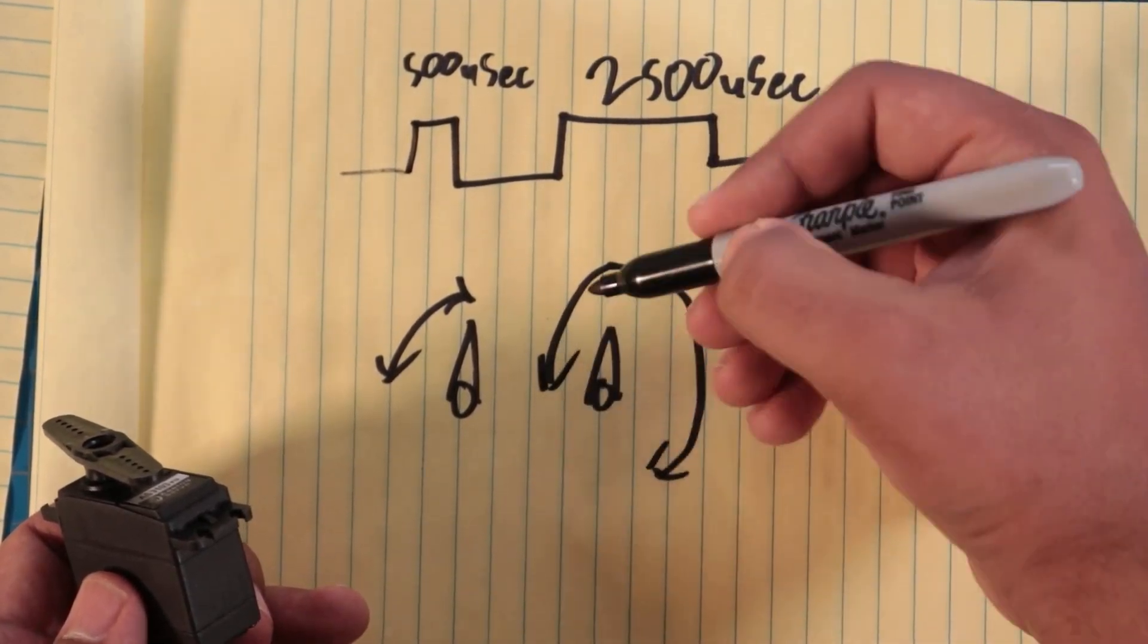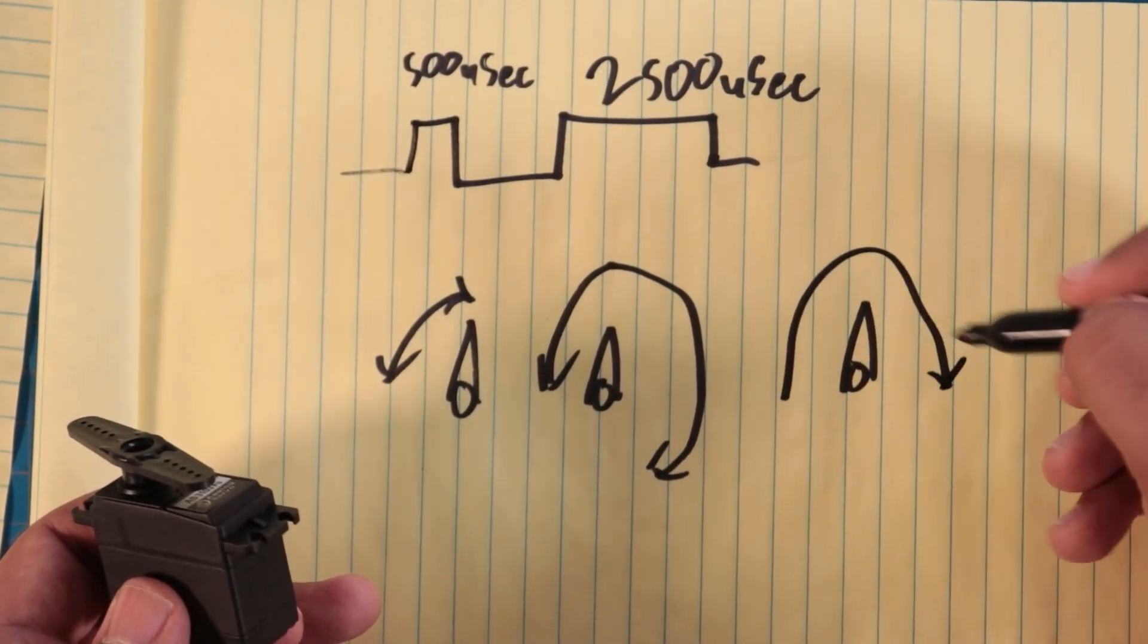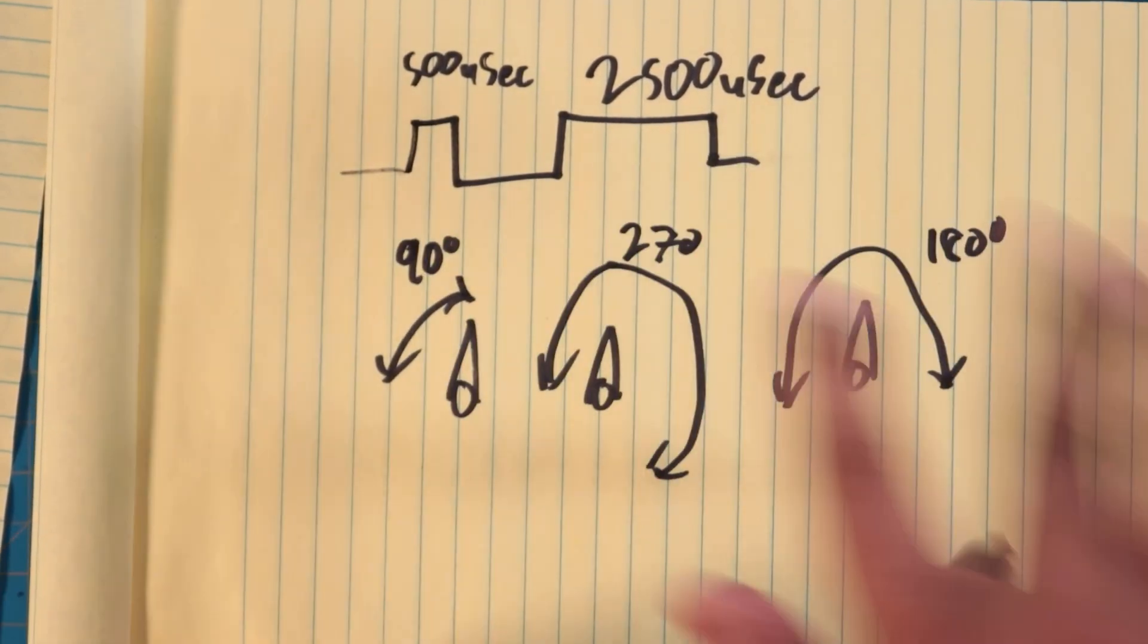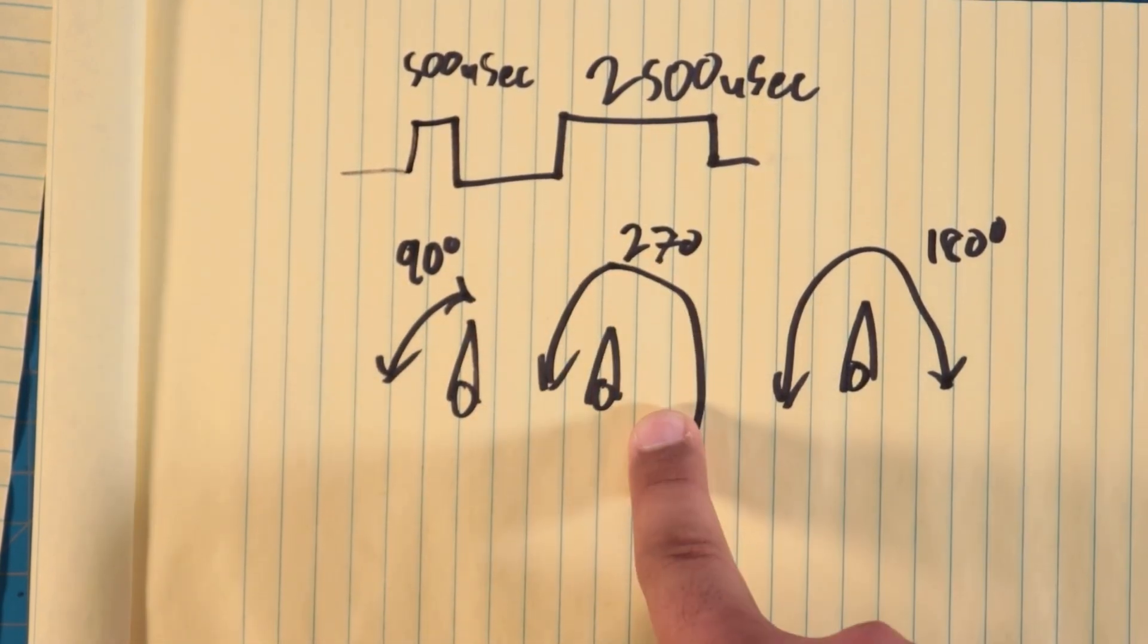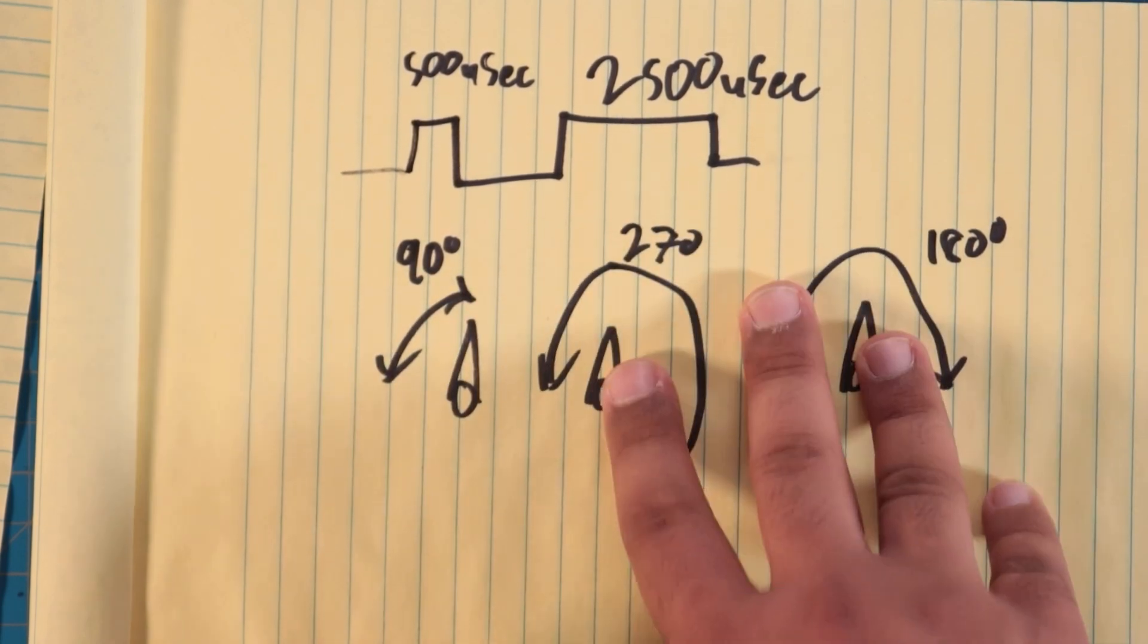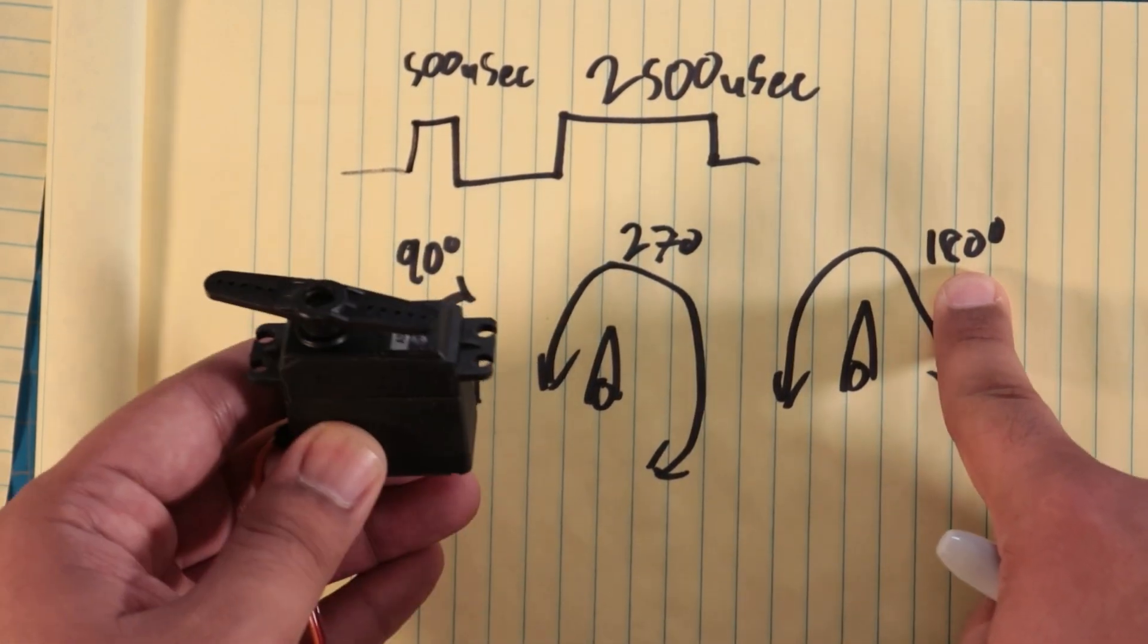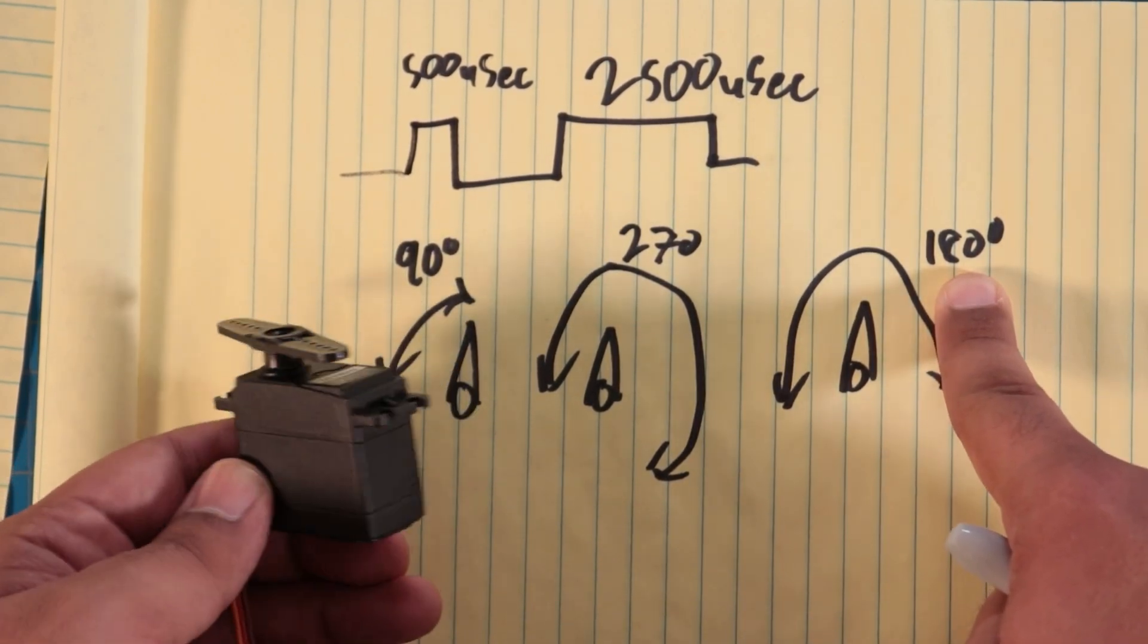Most of the cheap servos you find are going to have a range of motion anywhere from 90 degrees all the way to—well, some of the cheap ones do do 270. But for the most part, you're going to get ones that operate at a 180 degree range of motion.